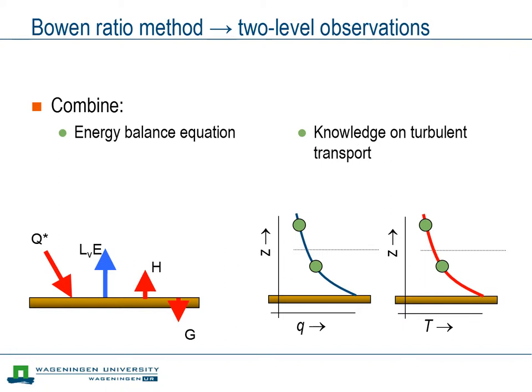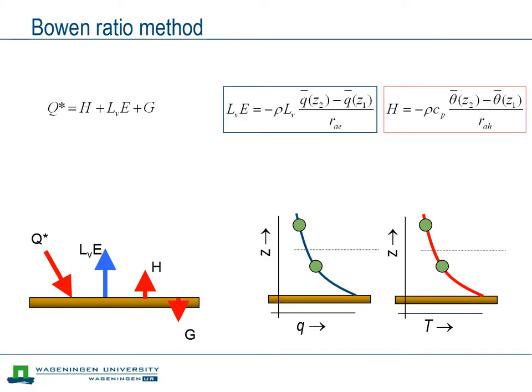In the case of the Bowen ratio method, the key point is the description of vertical fluxes in terms of the vertical differences of temperature and water vapor concentration. To link those fluxes to the vertical differences we use the aerodynamic resistance. But rather than quantifying those resistances based on our knowledge about turbulent transport, we will try to eliminate them.